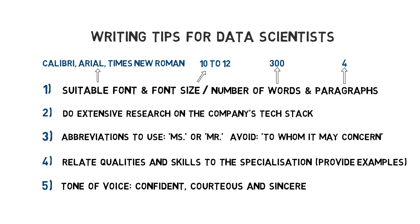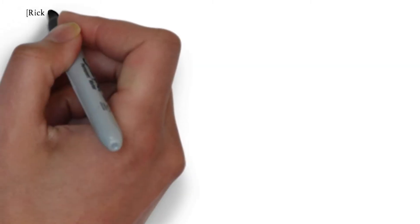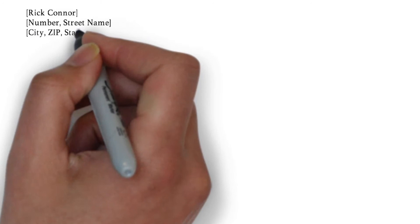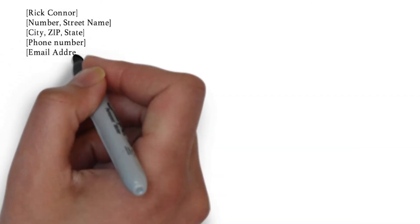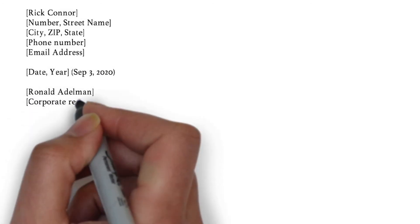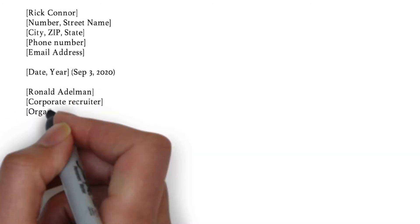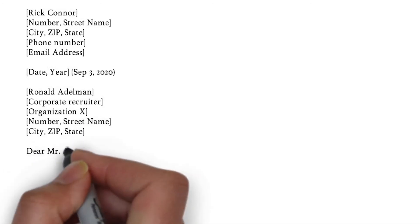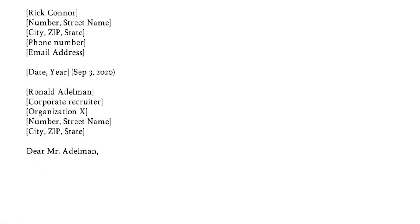Now let's continue with the example letter. We start off by listing our personal information on the left side, then we enter the date between white lines underneath, followed by the recruiter's name and company information. As for the salutation, you can write 'Dear' or 'Greetings Mr. Adelman'. For American usage, include a dot after the abbreviation Mr.; for British English, you'll leave it out.